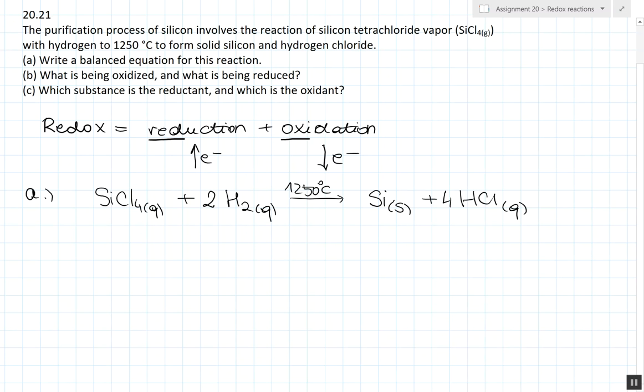Now that we have our balanced equation, we can get on to B, which requires us to write the half reactions of oxidation and reduction which take place. For this, we have to know the oxidation numbers of the elements in the reacting compounds.